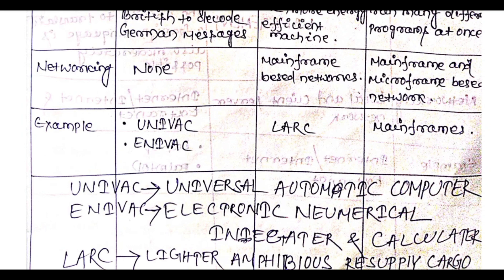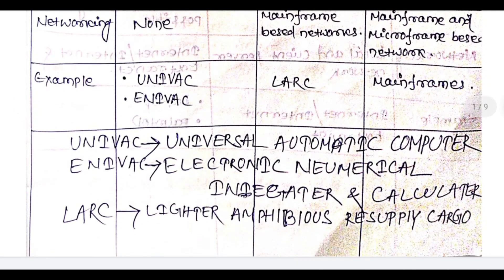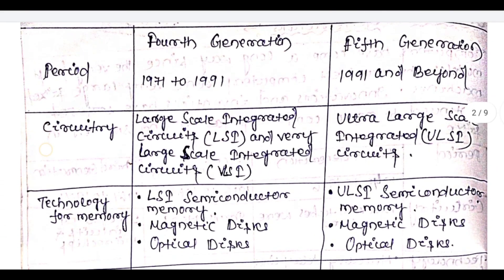Examples of first generation computers include the Universal Automatic Computer — UNIVAC — and ENIAC, the Electronic Numerical Integrator and Calculator. The second generation of computers used LARC and mainframes. LARC stands for Livermore Atomic Research Computer.